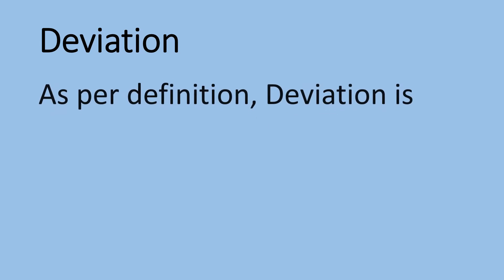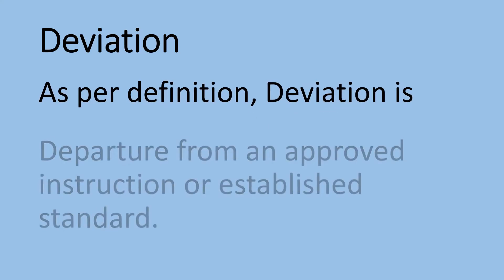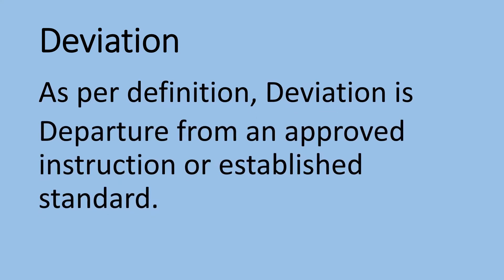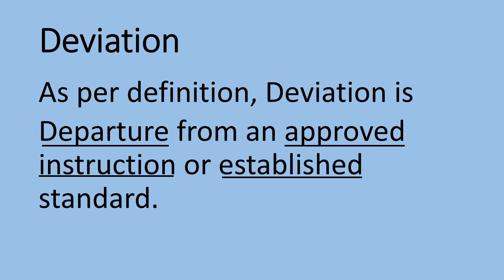Let us see what is the definition of deviation. As per the definition, deviation is a departure from an approved instruction or established standard. That means you did not follow the instructions as prescribed but deviated from the instructions of the procedure or established standard.